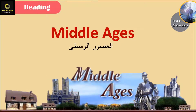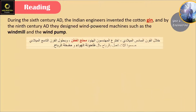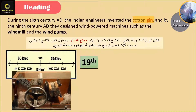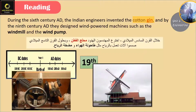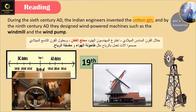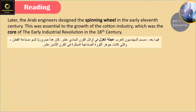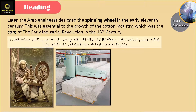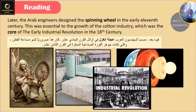Middle Ages. During the sixth century AD, Indian engineers invented the cutting engine, and by the ninth century AD they designed wind-powered machines such as the windmill and the wind pump. Later, Arab engineers designed the spinning wheel in the early 11th century. This was essential to the growth of the cotton industry, which was the core of the early industrial revolution in the 18th century.